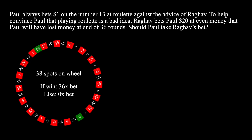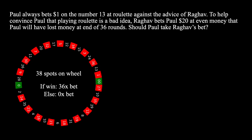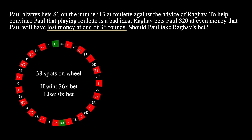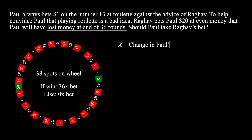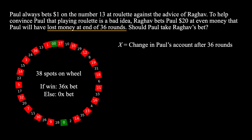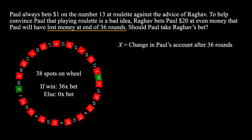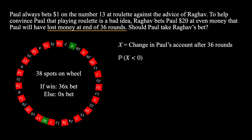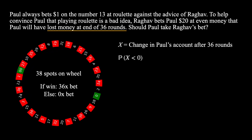Now let's focus on what the question is asking us for. We want to find the probability that Paul will have lost money at the end of 36 rounds. Let's start by defining a variable x, which is the change in Paul's account value after 36 rounds. We want to solve for the probability that x will be less than 0, meaning Paul will have strictly lost money at the end of 36 rounds.